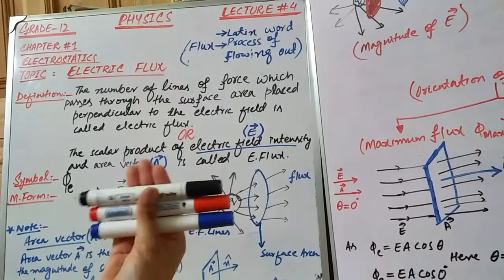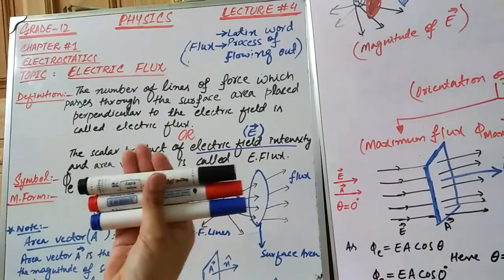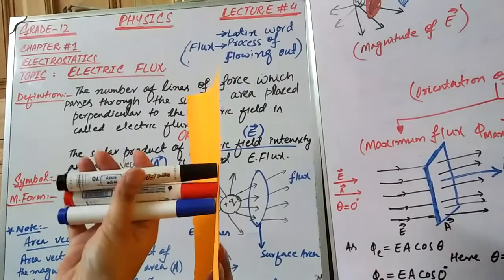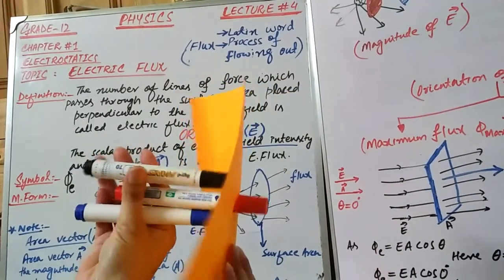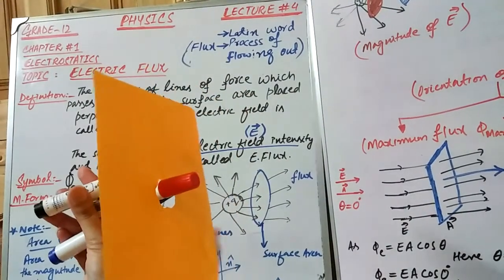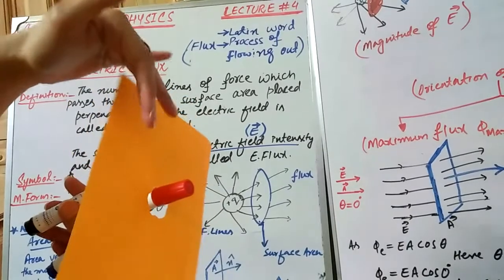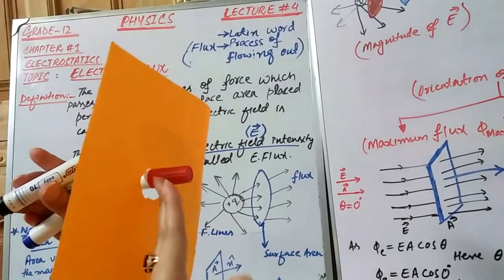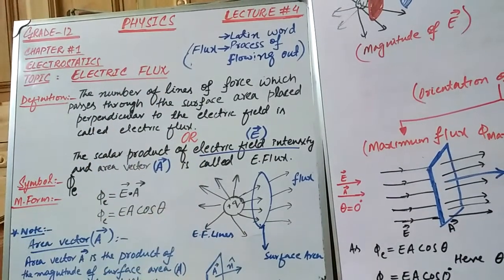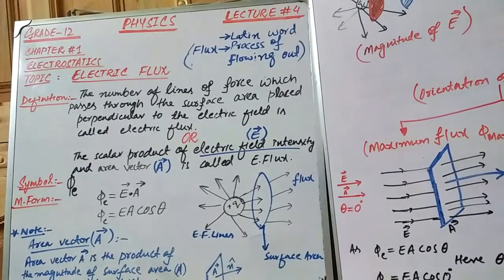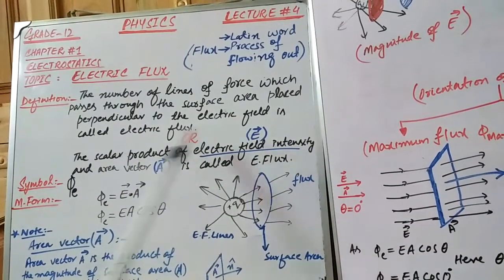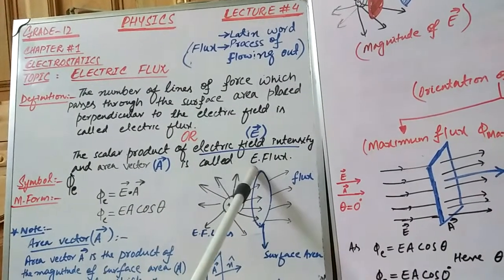These markers represent the direction of electric field lines, and I am placing a surface in the path of these electric field lines. Those lines which cross this surface make electric flux. The other definition is: the scalar product of electric field intensity and area vector is called electric flux.